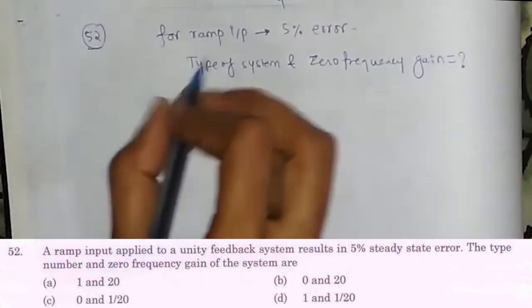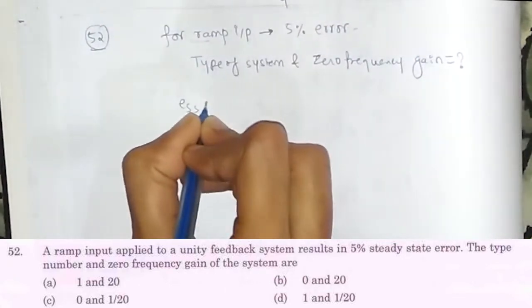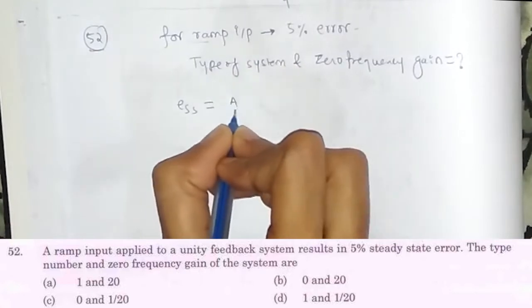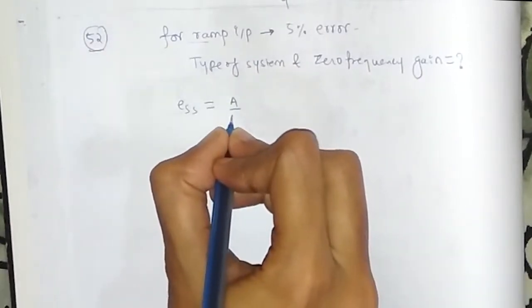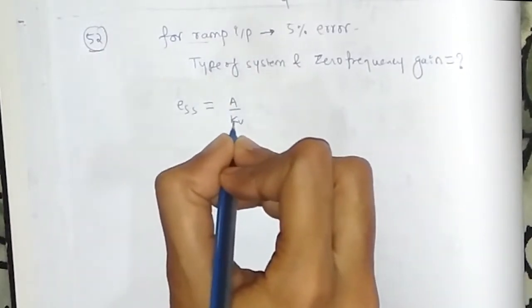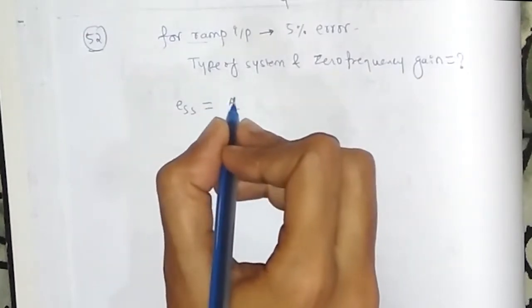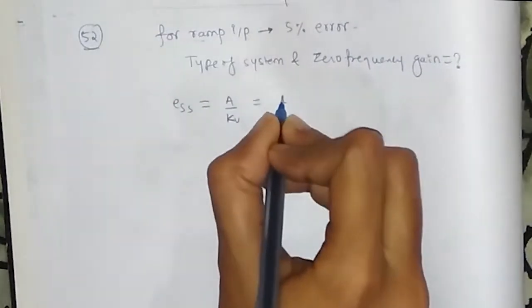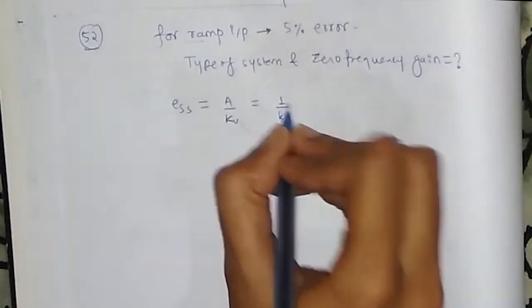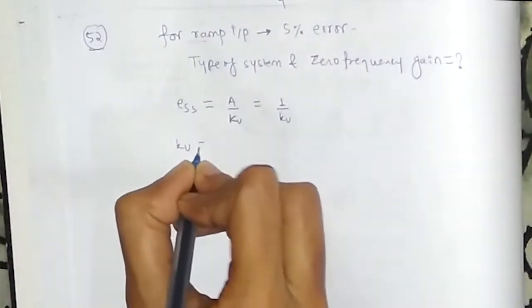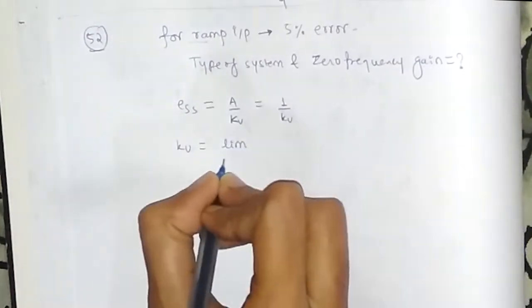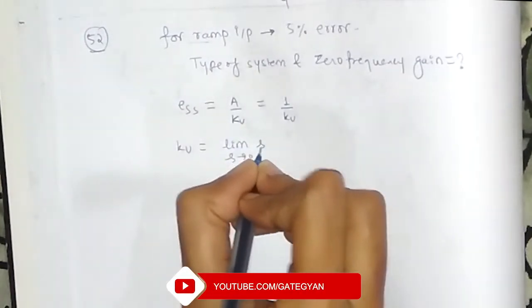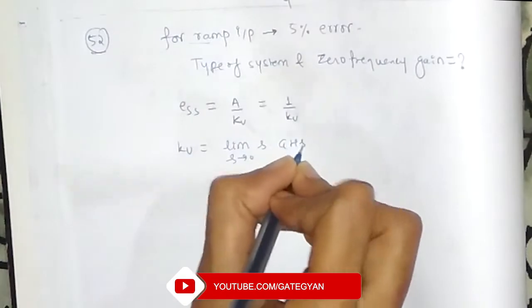So for a ramp input, ESS is equal to A upon Kv where A is the constant term associated with input. So here it is going to be 1 upon Kv and this Kv is limit S tends to zero S into G(s)H(s).